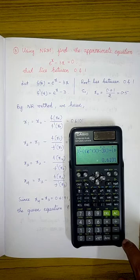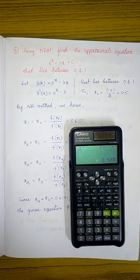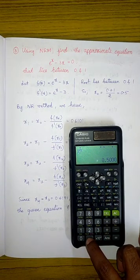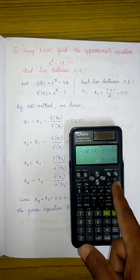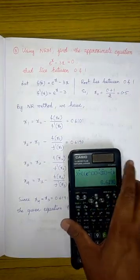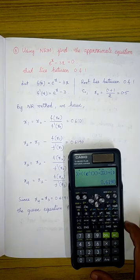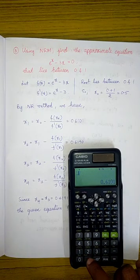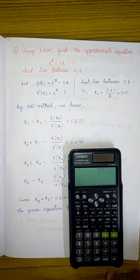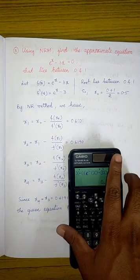To get the next approximation, hit the equal button and substitute the X value as 0.6191. So we will get 0.6190 as the next approximation. Again, to calculate the next approximation value, hit the equal button and 0.6190 again. So we will get 0.6191.